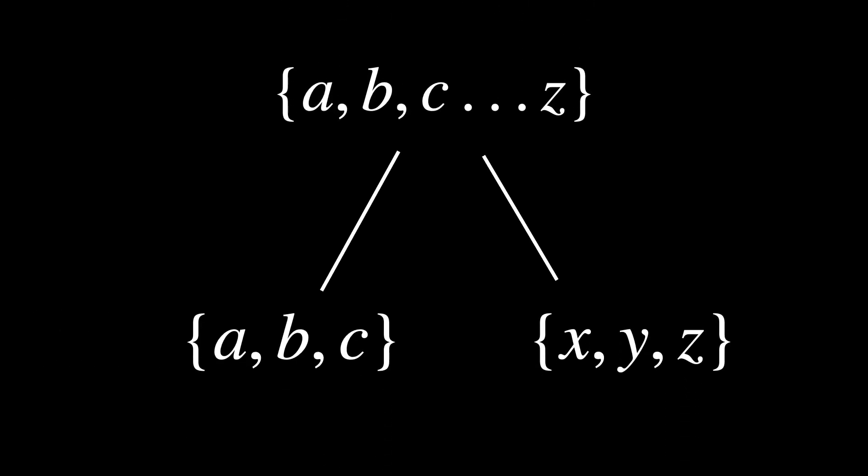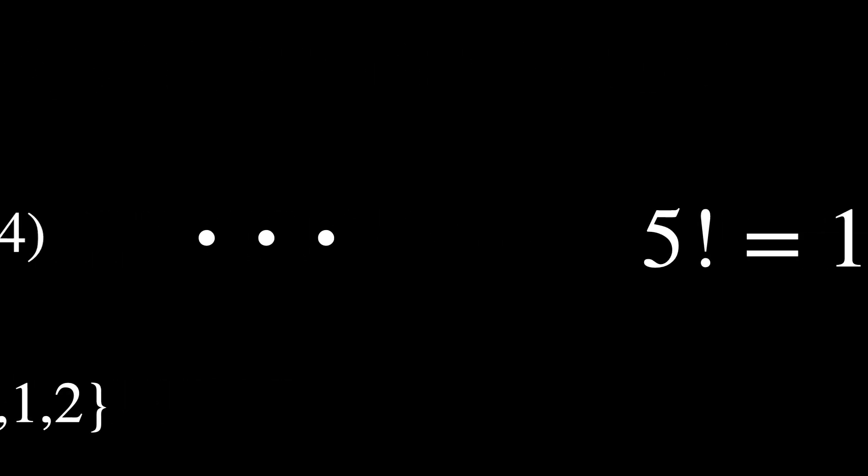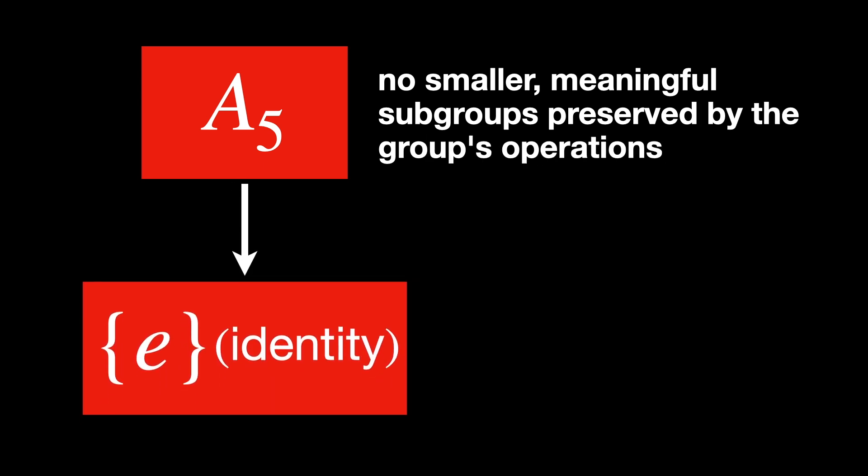Finite groups have an interesting analogy with integers and factorization. Just as integers can be broken down into factors, groups might be similarly broken down through a concept similar to factorization. How groups are defined using factorization is still an unanswered question in group theory, known as the group extension problem. A subgroup is essentially a smaller group inside a larger group. A5 is the group of all even permutations of five elements — a finite simple group containing 60 elements, since 5 factorial equals 120 and half are even permutations. A5 is called simple because it has no non-trivial normal subgroups, meaning it can't be broken down beyond its original identity state.